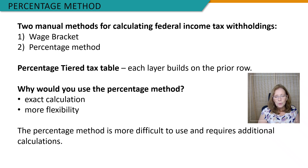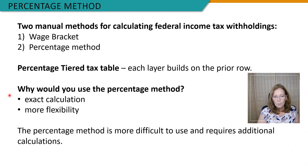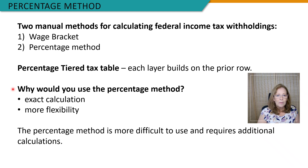The computations in these tables were changed in 2021 to make them more consistent between the withholdings per pay period and the amount calculated on the annual tax return. So how is this method different from the wage bracket method? It's more exact. The wage bracket table has bands, and within that band each employee has the same dollar amount of federal income tax withholdings even if the wage differs. That's not the case with the percentage table, because the calculation is based on the exact taxable wage of the employee. The percentage method also allows more flexibility for calculations involving high wage earners or uncommon pay periods, but it's more difficult to use and understand and requires additional calculations.